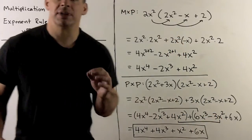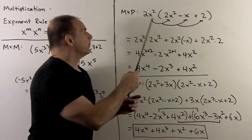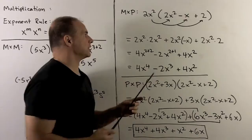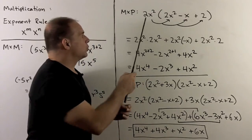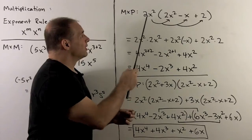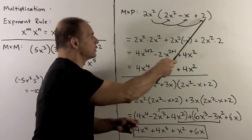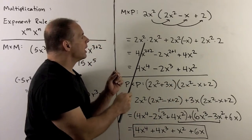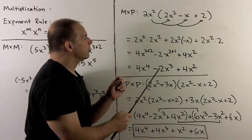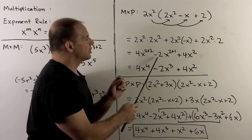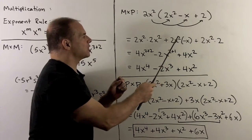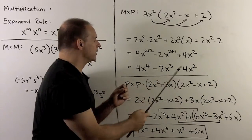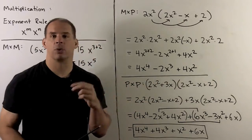Next stage: monomial times polynomial. Here, I distribute the monomial into each term in the parentheses. So 2x squared goes with 2x squared, 2x squared goes with minus x, and 2x squared goes with 2. Then we add everything together. First term: 2 times 2 is 4, add the exponents to get x to the 4th. Second term: minus 2, and x is x to the 1, add exponents to get x cubed. Last term: 2 times 2 is 4, so 4x squared. Result: 4x to the 4th minus 2x cubed plus 4x squared.